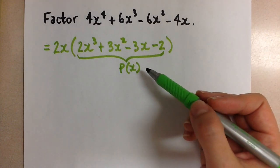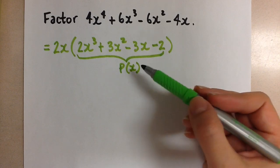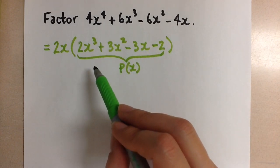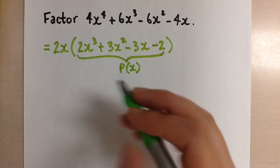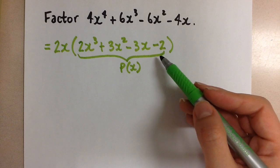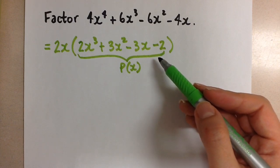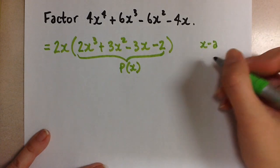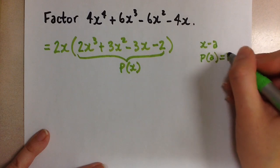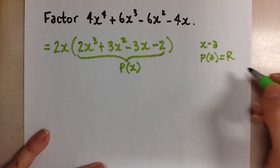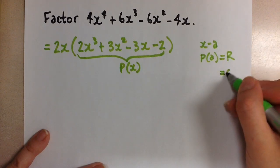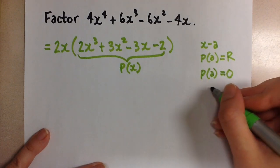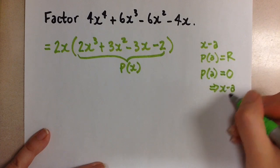The factor theorem says that if x minus a is a factor of the polynomial, then the remainder is going to be equal to 0. We know that we can find the remainder of any polynomial using the remainder theorem. So if the divisor is x minus a, then P at a is going to be equal to the remainder. So if x minus a is a factor, then our remainder is going to be 0. So we're looking for the a value that makes the remainder 0, and that will tell us that x minus a is a factor.